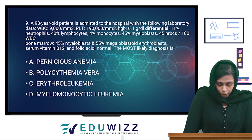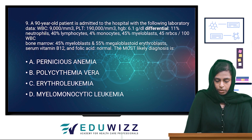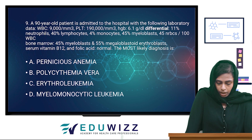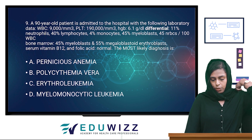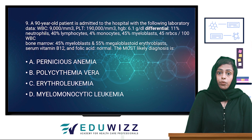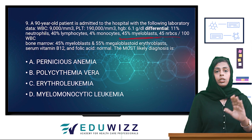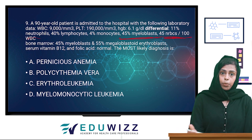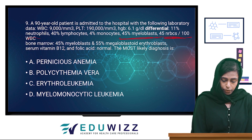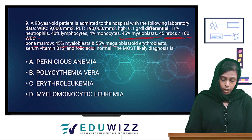A 90-year-old patient is admitted to the hospital with the following data: WBC 9,000; platelets 190,000; hemoglobin decreased at 6.1. Differential count: 11% neutrophils, 40% lymphocytes, 4% monocytes, 45% myeloblasts, and 45 NRBCs per 100 WBCs. Look at the erythroblasts. Serum vitamin B12 and folic acid levels are normal.